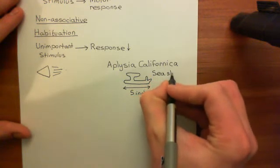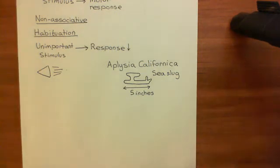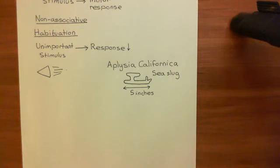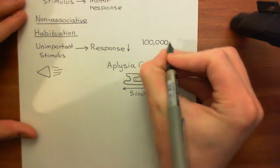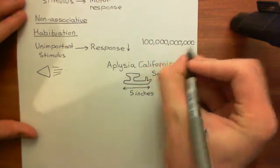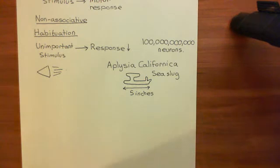You might be wondering why we're talking about sea slugs. Basically, a lot of neuroscientific experiments into the neural mechanisms of procedural learning have been done in Aplysia californica. The human brain contains 100 billion neurons — a huge number. Each of these neurons can have around 10,000 connections to other neurons. The complexity there is incomprehensible, and we are nowhere near understanding how the human brain works on the whole level.